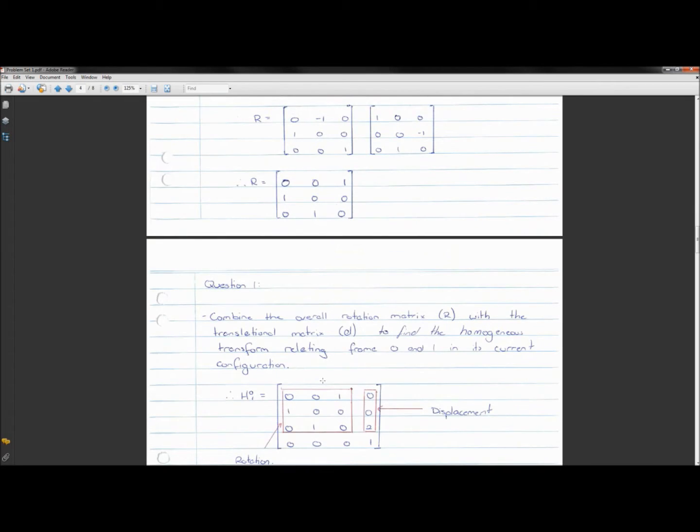We then have to get our actual homogeneous transform. So this is just an overall rotational matrix, as I like to call it. We then combine the overall rotation matrix R with the translational matrix D to find the overall homogeneous transform, relating, in this case, frame 0 and 1 in its current configuration. This homogeneous transform will only work in the current configuration.